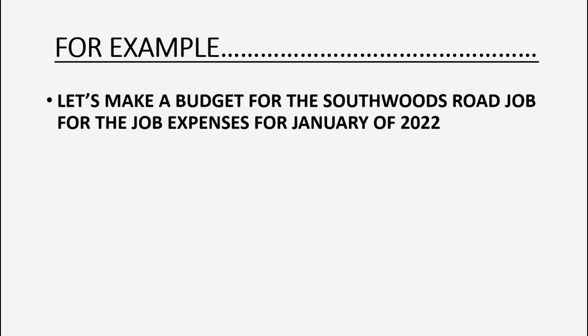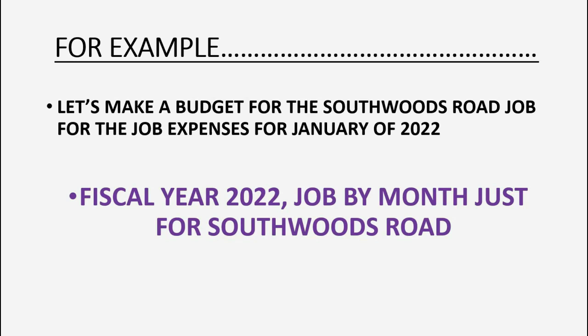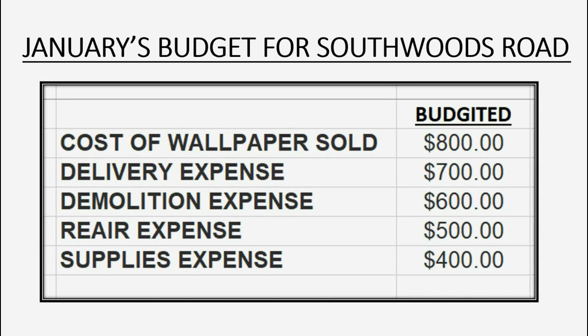Here's our first example. Let's imagine that we're making a budget for the Southwoods Road job for the job expenses of January of 2022. That means fiscal year 2022, job by month, just for Southwoods Road. Let's pretend these are the budgeted amounts for these five expenses: 8, 7, 6, 5, 4.